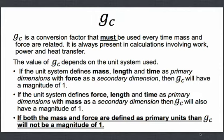If the unit system defines mass, length, and time as primary dimensions, with force as a secondary dimension, then GC will have a magnitude of 1. If the unit system defines force, length, and time as primary dimensions, with mass as a secondary dimension, then GC will also have a magnitude of 1. If both the mass and the force are defined as primary units, then GC will not have a magnitude of 1.